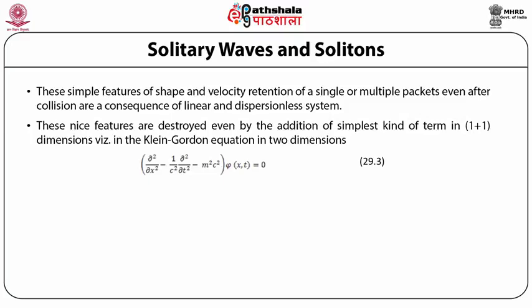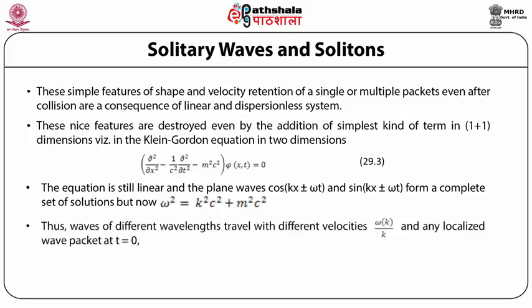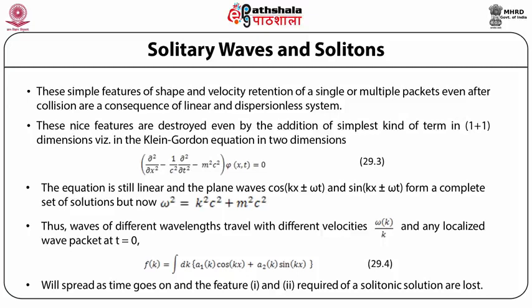These nice features are destroyed even by the addition of the simplest kind of term in the Klein-Gordon equation in 1+1 dimensions: (∂²/∂x² − (1/c²)∂²/∂t² − m²c²)φ(x,t) = 0. The equation is still linear and plane waves form a complete set of solutions, but now ω² = k²c² + m²c². Thus waves of different wavelengths travel with different velocities ω(k)/k, and any localized wave packet will spread as time goes on, so the solitonic features are lost.